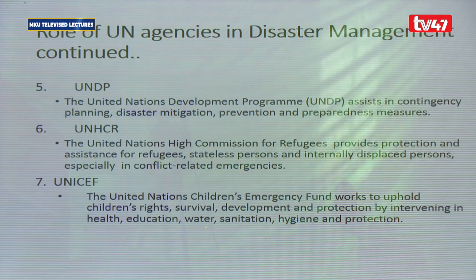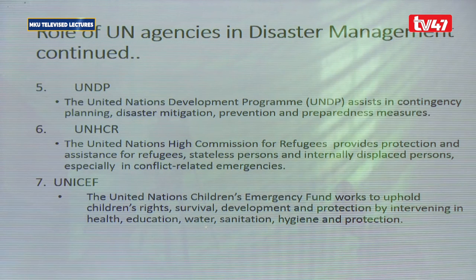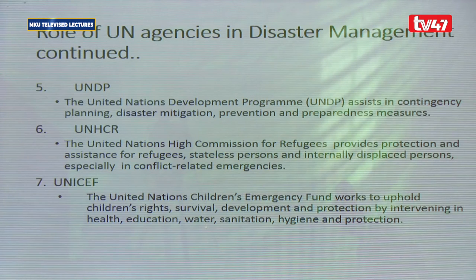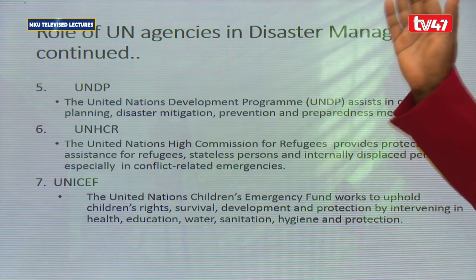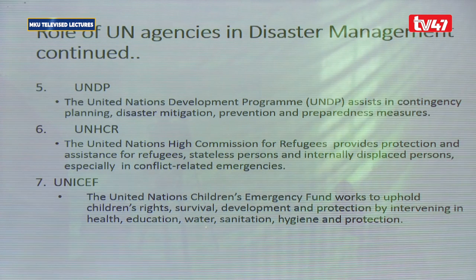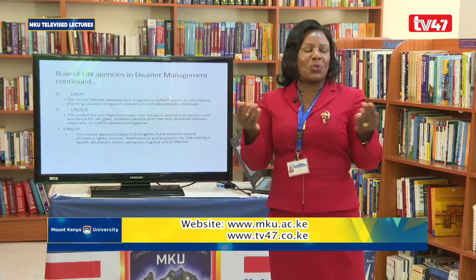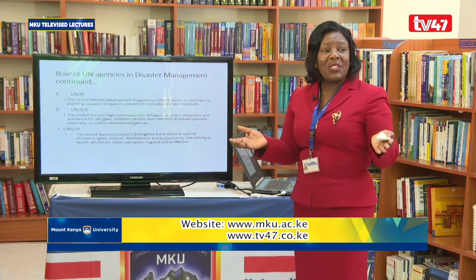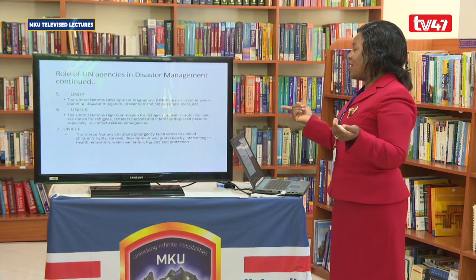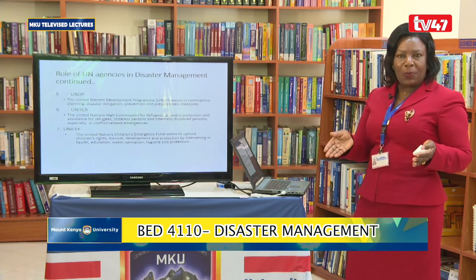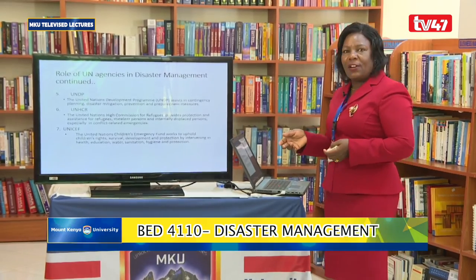Number seven is UNICEF — the United Nations Children's Emergency Fund. It works to uphold children's rights, survival, development, and protection by intervening in health, education, water, sanitation, hygiene, and protection. During emergencies, children are unable to express themselves or identify their parents. UNICEF comes in to ensure their rights are protected, they are not exploited, and they survive.